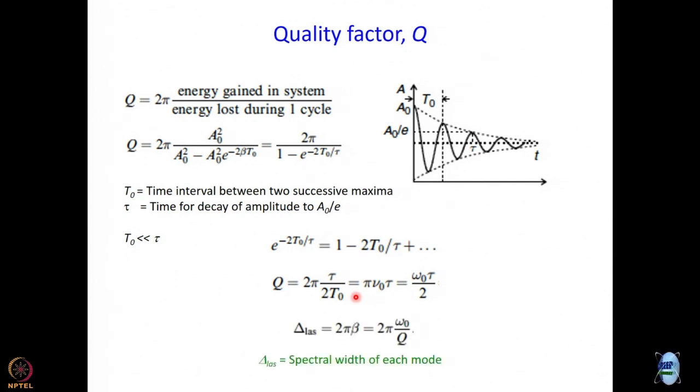Now, next part I am not going to derive. I will just tell you that delta less, what is delta less? Spectral width of each mode is given by 2 pi into omega 0 by Q. This is the expression for spectral width of each mode. The purpose of this discussion is twofold. First, to emphasize the fact that longitudinal modes do not have delta function spectra.